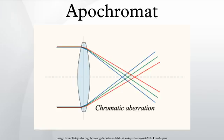Apochromats are also corrected for spherical aberration at two wavelengths, rather than one as in an achromat.